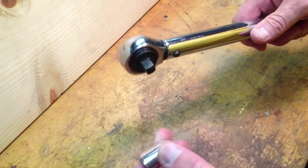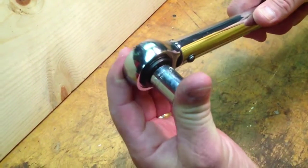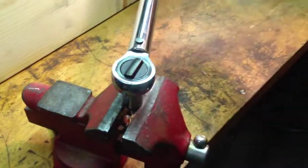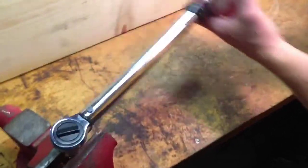What we're going to do is stick our 9-16ths socket on the ratchet end, and I went ahead and put a bolt in the vise so we can try this out.